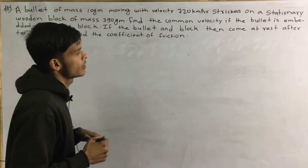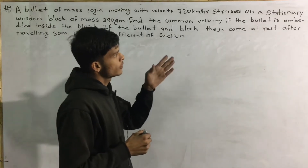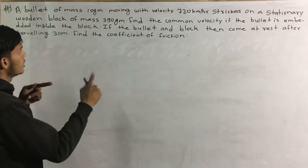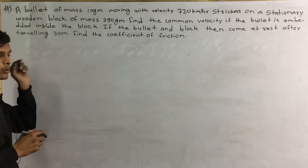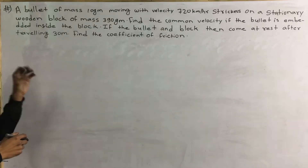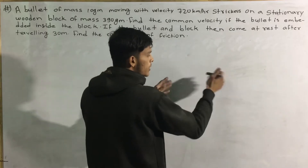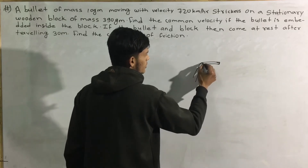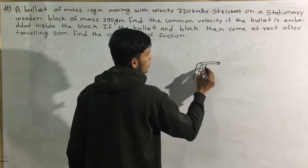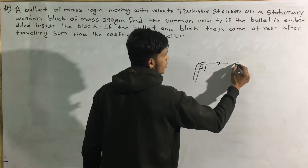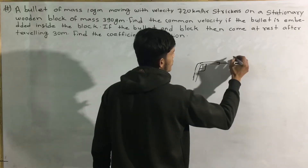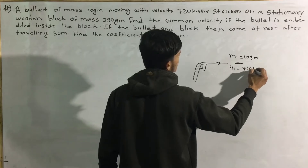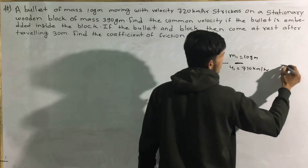It is 7 to 20 km per hour, and the other one is on the block so that the block is blocked. The block is 10 grams and it is a bullet. This is a mass of 10 grams, and the initial velocity U is 70 km per hour. So x equals 70 km per hour.